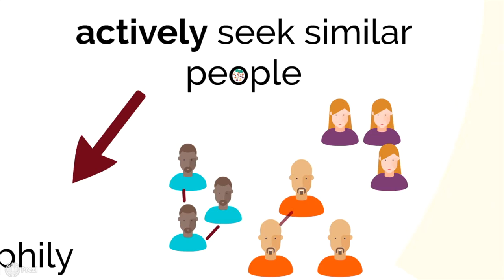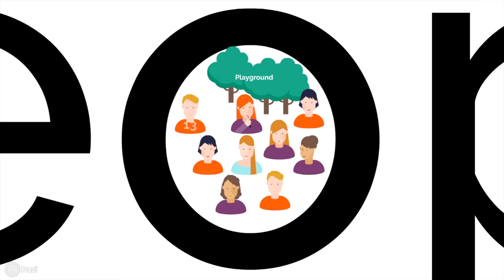Choice homophily, on the other hand, suggests that individuals will actively seek out and find others who are similar to themselves and form ties with them. So even with a fairly high presence of a different other in a group, individuals will still likely form ties with similar others. Coming back to the age example: even in a setting where people from different age groups are present — on the playground, for example — students will seek out to play with students of the same age.